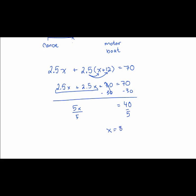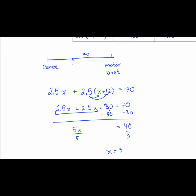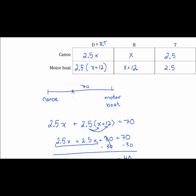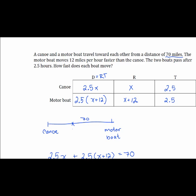Remember that in a word problem we're generally not done when we find our value of x. If we go back to the question, we want to answer how fast does each boat move. We found that x equals 8, which is the canoe's speed, but we also need to find the motorboat's speed. We find that by plugging 8 in for x, adding that to 12, and we get that the motorboat goes 20 miles per hour.